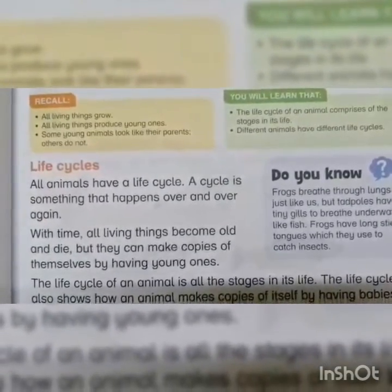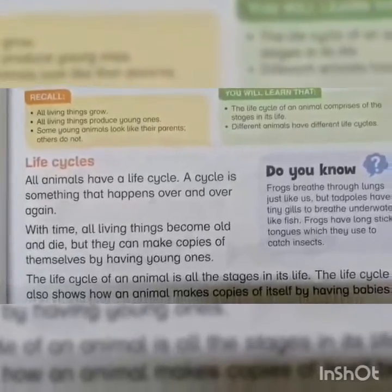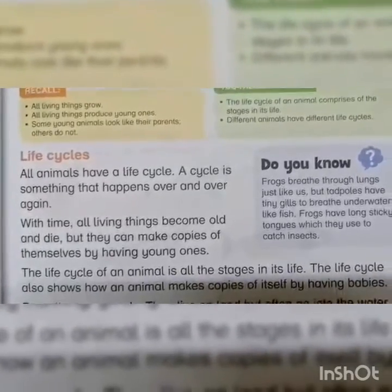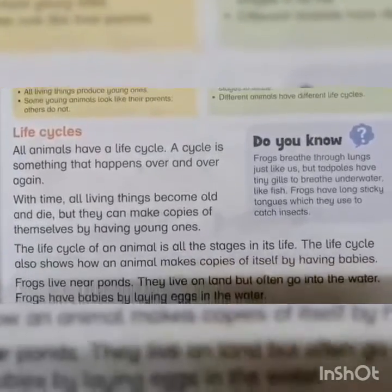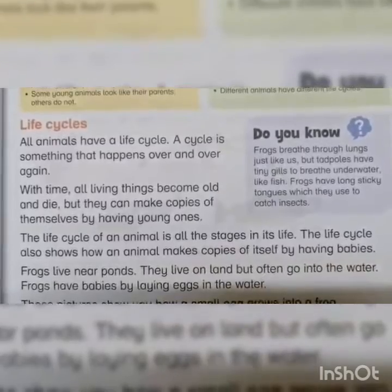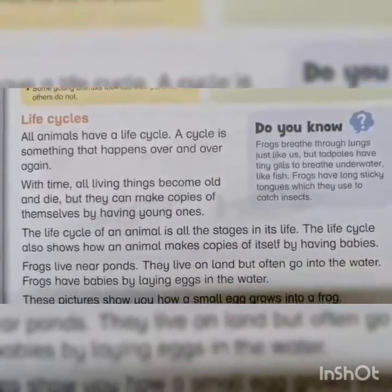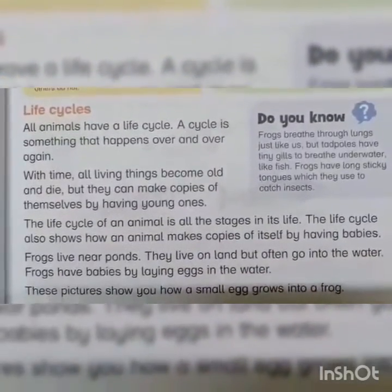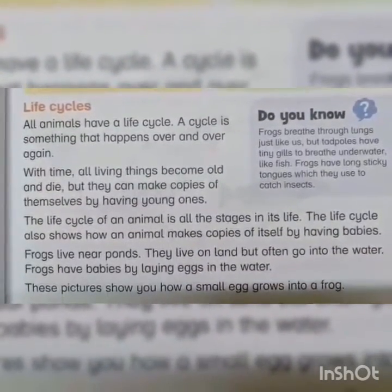The life cycle of an animal is all the stages in its life. The life cycle shows how an animal makes copies of itself by having babies.